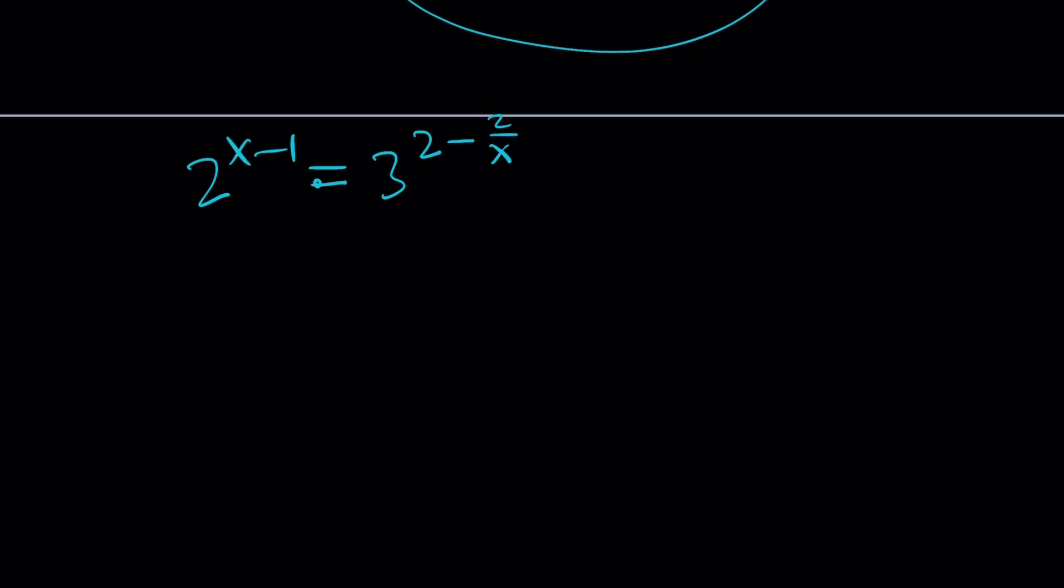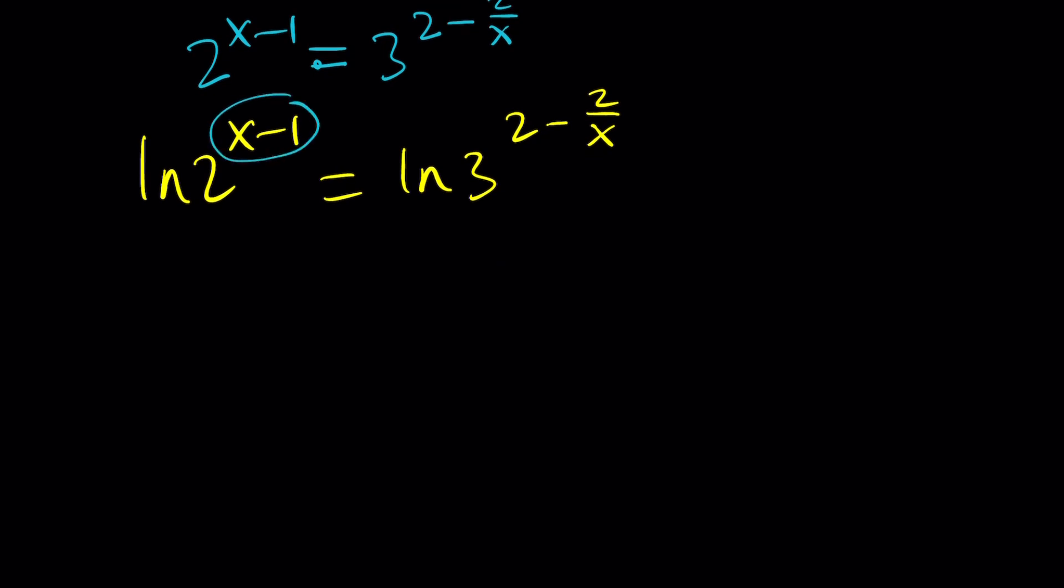And to be able to solve these equations, the best method is usually using logs. In this case, I'm going to use natural log on both sides. So if I ln this and ln that, I should be getting the powers in the front. We can bring these down. That gives us x minus 1 times ln 2 equals 2 minus 2 over x times ln 3. So we were able to simplify this to some extent. At least there is no variable in the exponent.